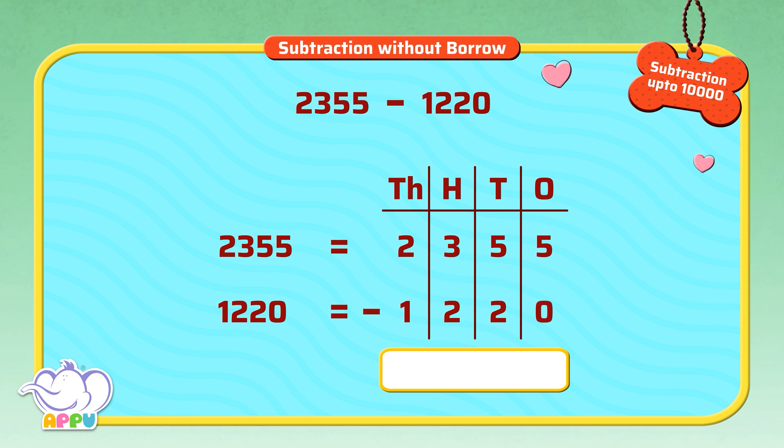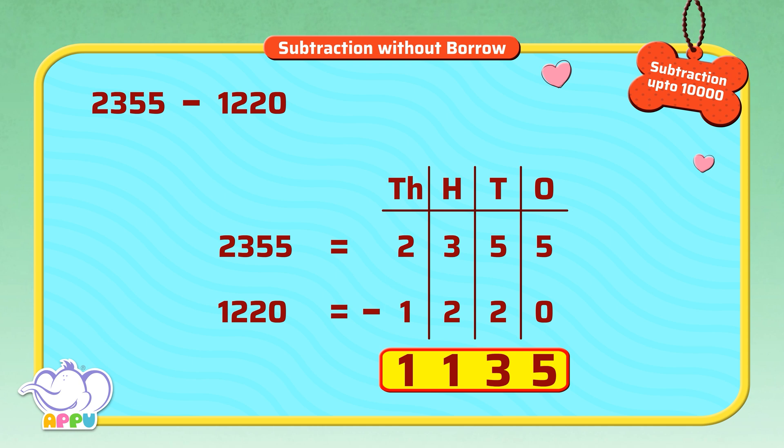Now we subtract the ones. Five minus zero equals five. Then we subtract the tens. Five minus two equals three. Then we subtract the hundreds. Three minus two equals one. And subtract the thousands. Two minus one equals one. The answer is 1,135. So 2,355 minus 1,220 is 1,135.